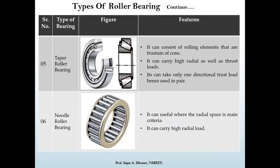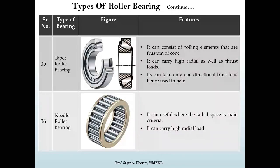Next is the taper roller bearing. Its construction is similar to the previous one but the rolling element has a tapered cone shape. It can carry high radial load as well as thrust loads, but in only one direction. Therefore, taper roller bearings must be used in pairs to handle thrust in both positive and negative directions.